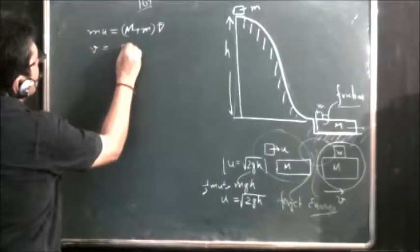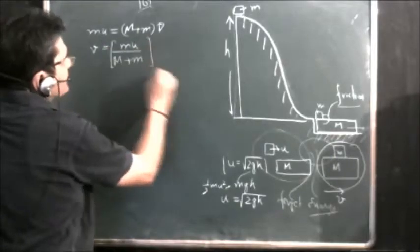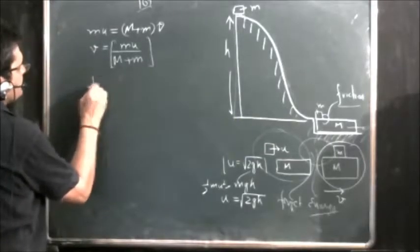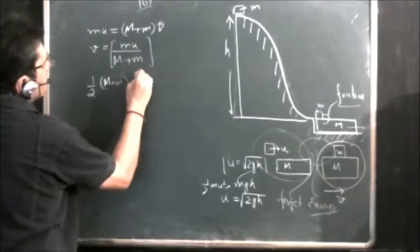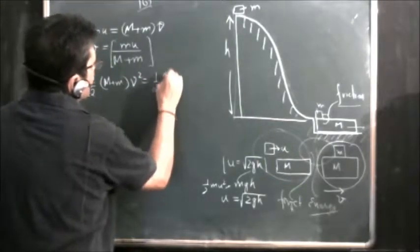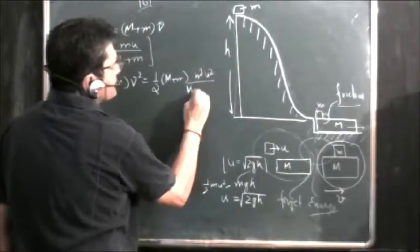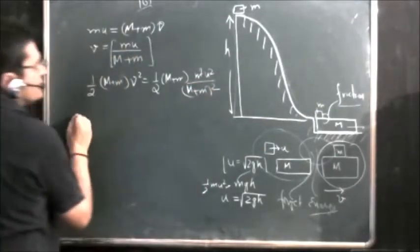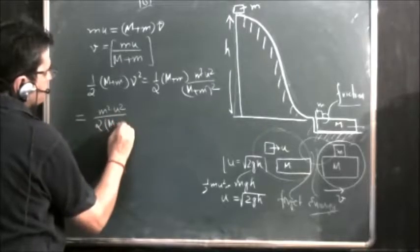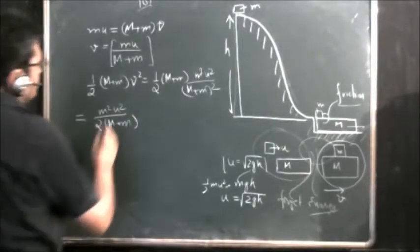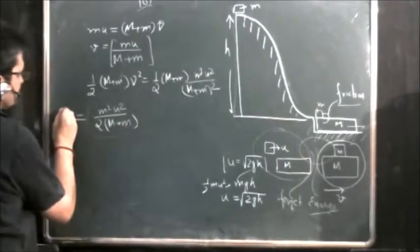The final velocity V = mu / (M + m). The kinetic energy of the system is half(M + m)V², which equals m²u² / [2(M + m)].